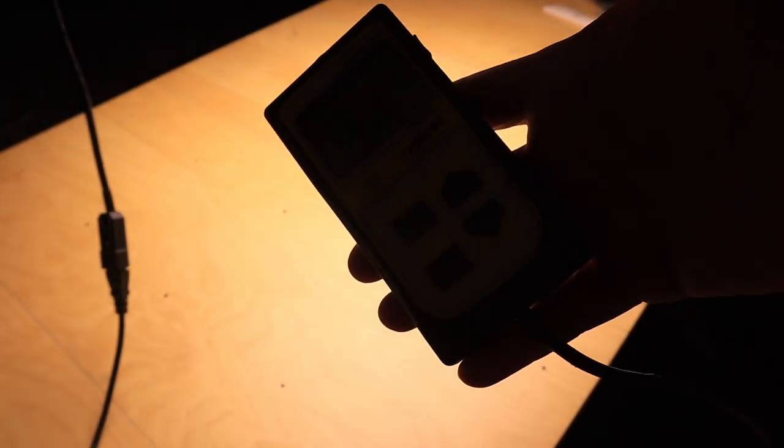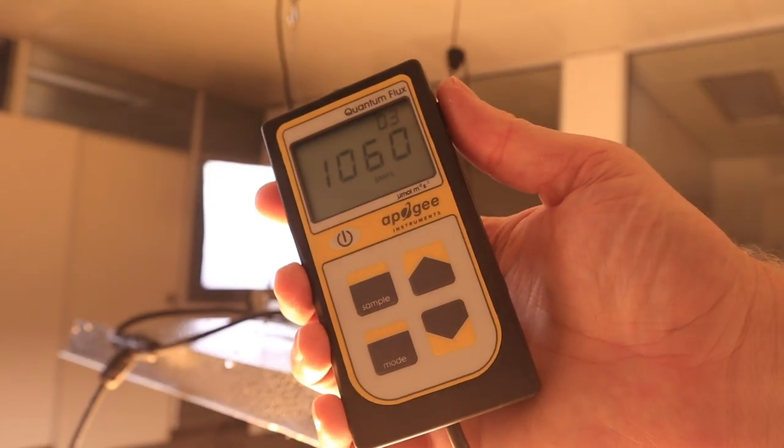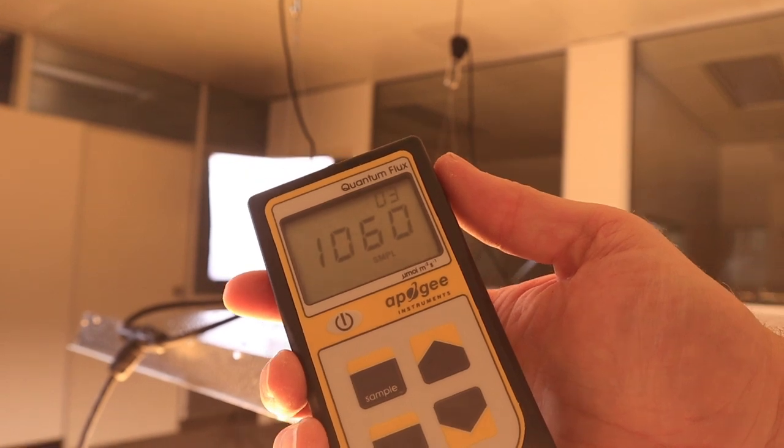Brightest spot is always in the middle, right under the unit. And we have 1060 micromole per square meter per second.